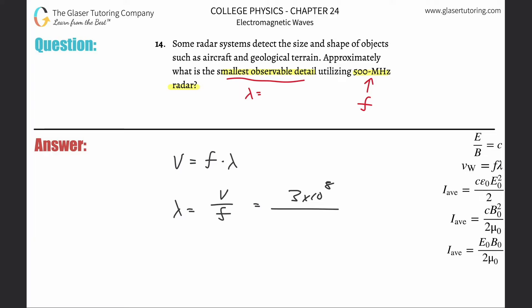So this is three times 10 to the eight divided by the frequency of 500 megahertz. So this is 500 times 10 to the sixth hertz, right? And then all we got to do is plug it on in. So this is three times 10 to the eight divided by 500 times 10 to the sixth.